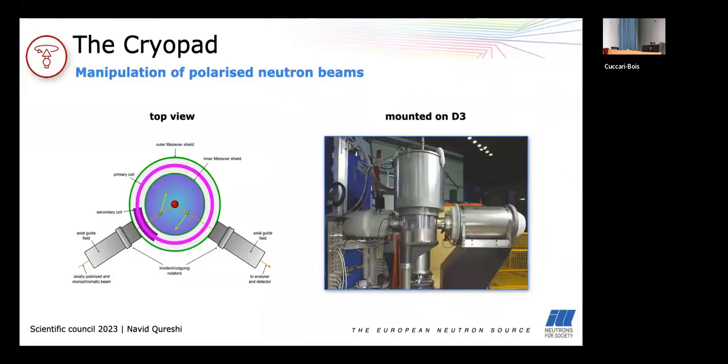Here we have a sketch of the top view and a picture of how it's mounted on D3. And like in the Alperin experiment you have two different guide fields on the incoming and outgoing side which are called the nutators. You have the zero field chamber here where the sample is, but now the decisive thing is that you have a precession coil which creates a magnetic field in the plane. And this is separated by an inner Meissner shield so you have no field inside where the sample is, and it's separated by an outer Meissner shield so there is no superposition of the precession field here and the guide fields in the nutators.